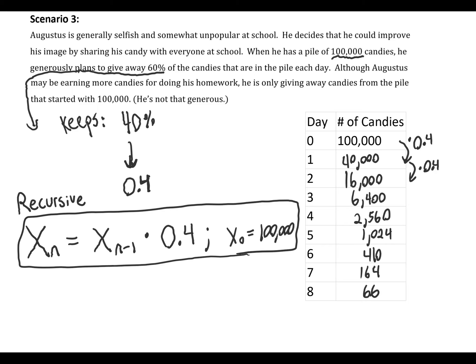So the two questions that we're asked to answer are: how many candies will we have on day four? And so that's answered here: day four, 2,560 candies. And day eight, all the way down to 66 candies. And we also want to write an explicit rule to model the situation.